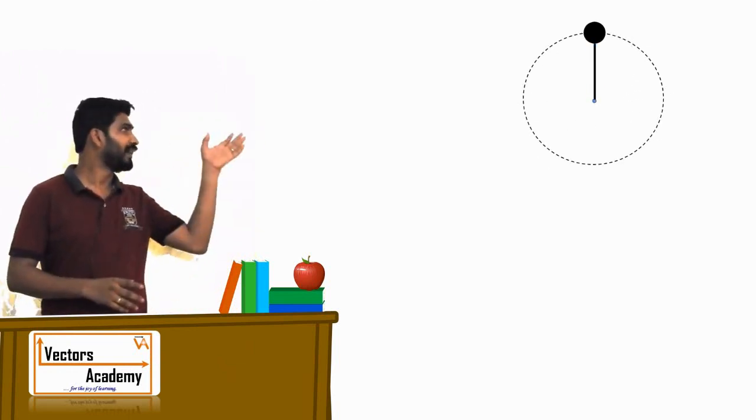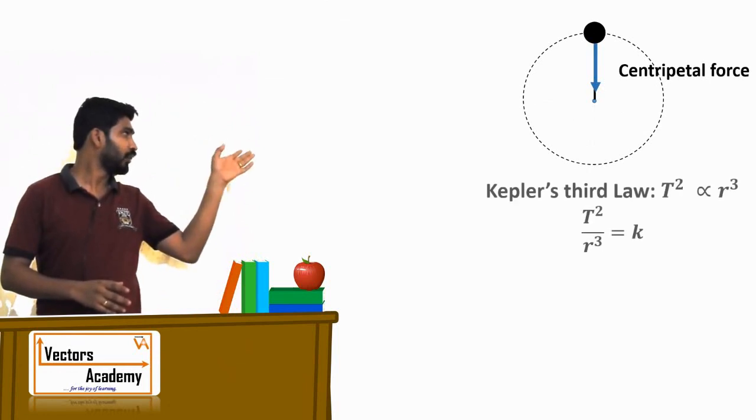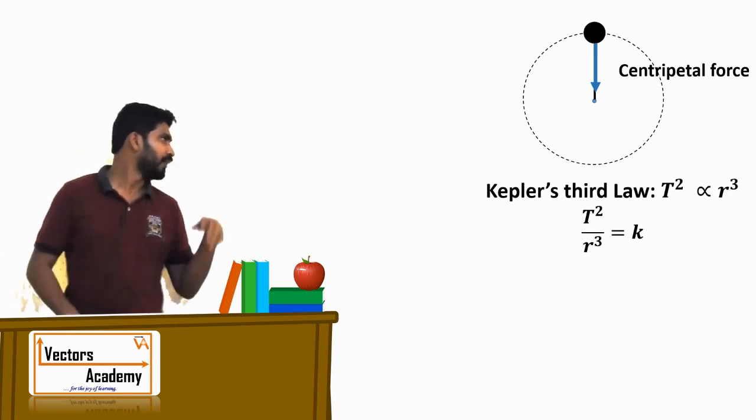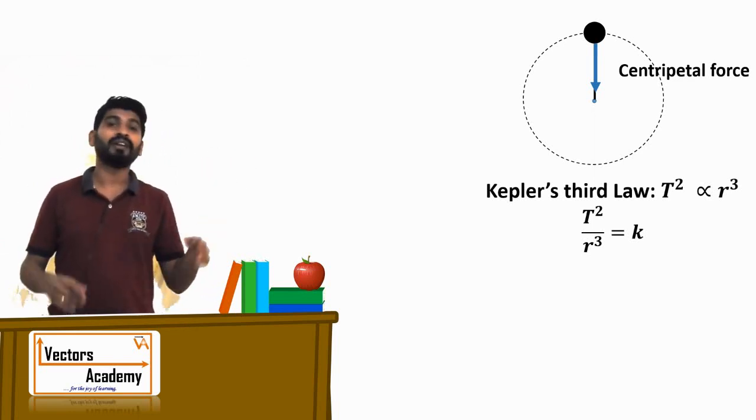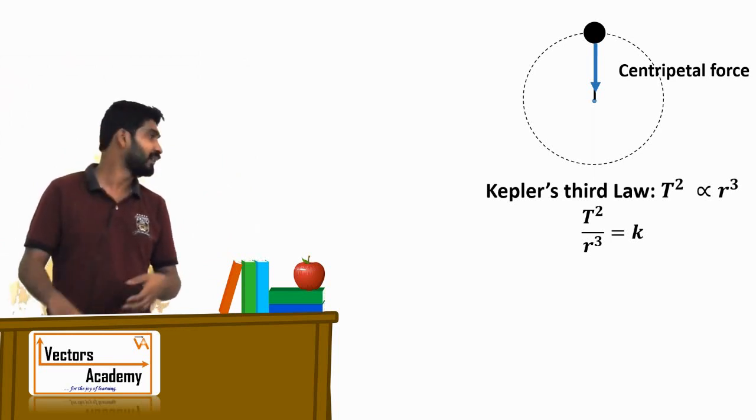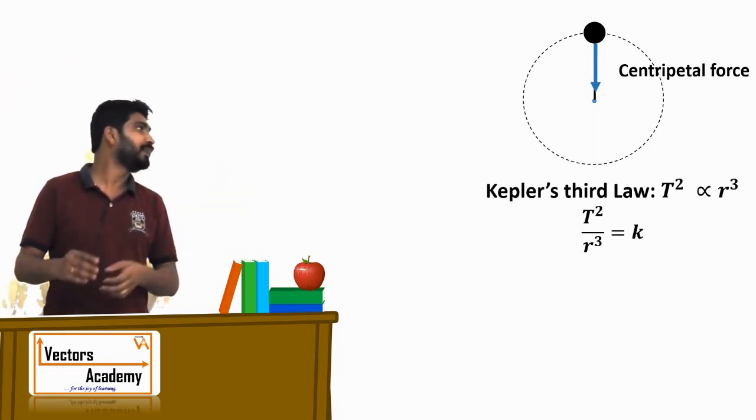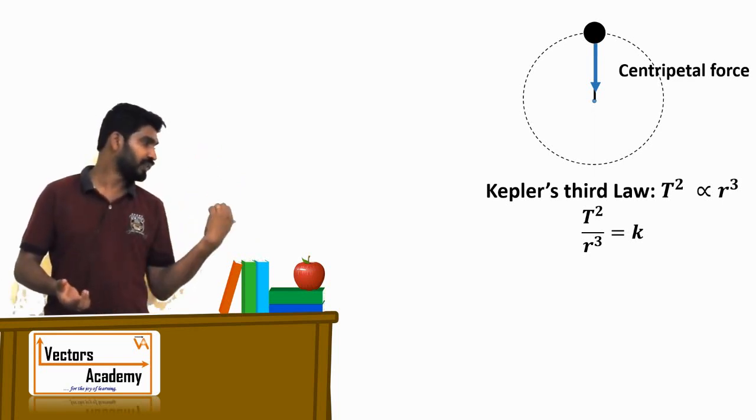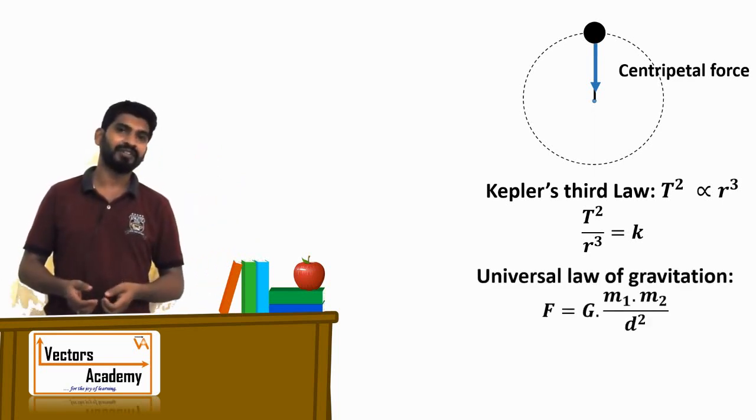So far we have learned about centrifugal force, Kepler's laws, and the third law of Kepler. We have studied that T² is directly proportional to r³, where T is the period or time required by the object to complete one revolution around the sun, and r is the mean distance of the planet from the sun.